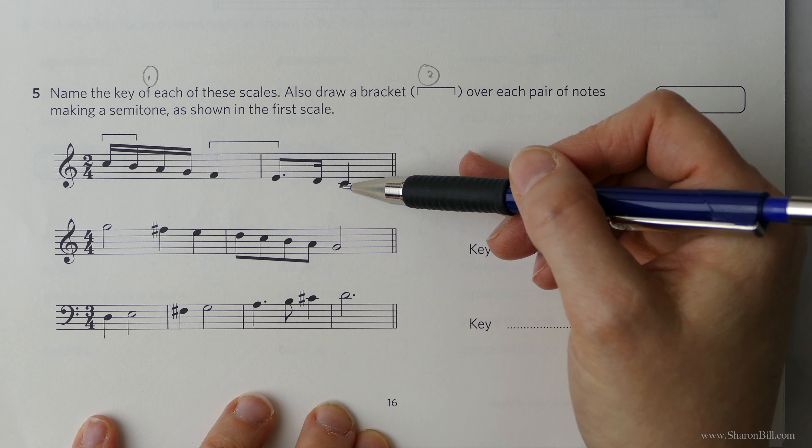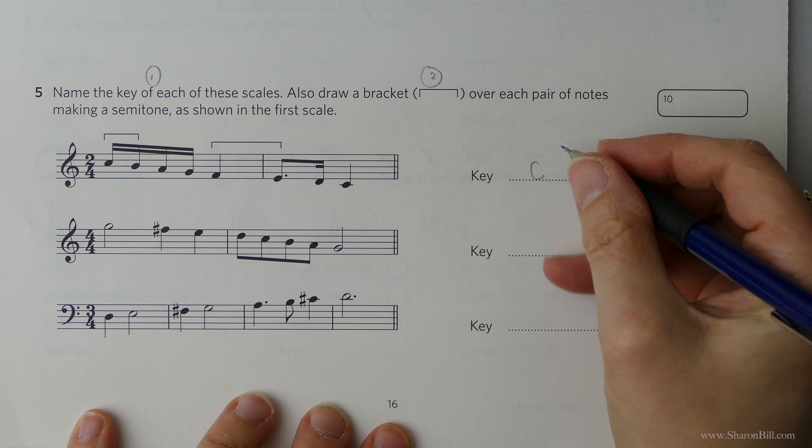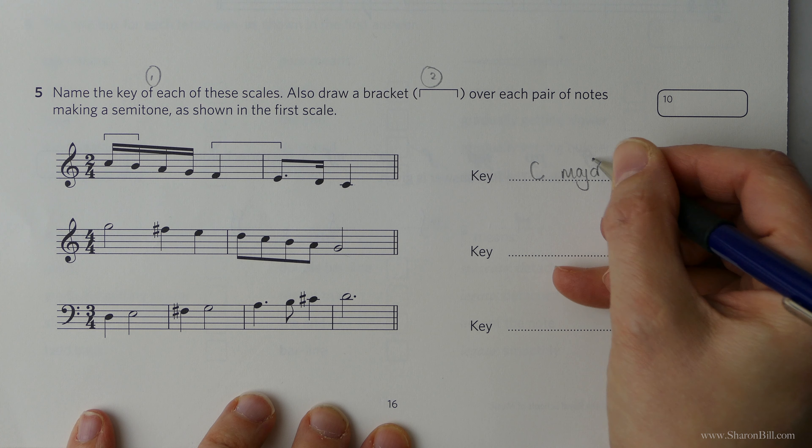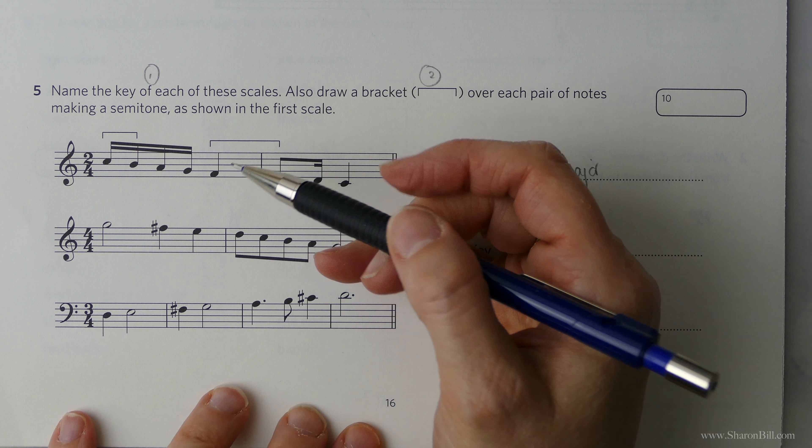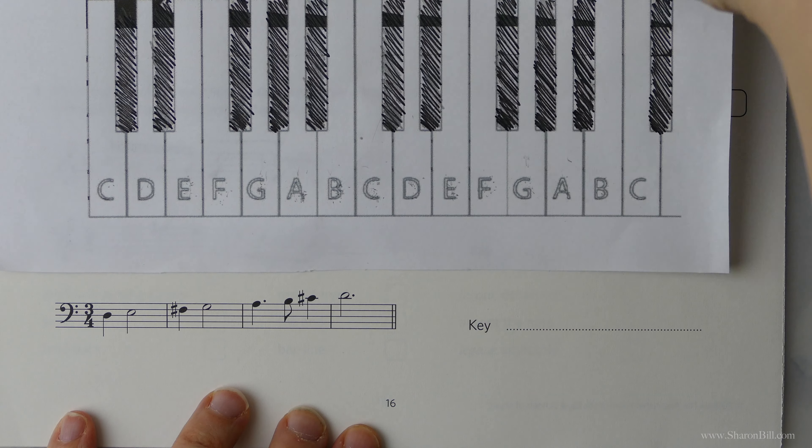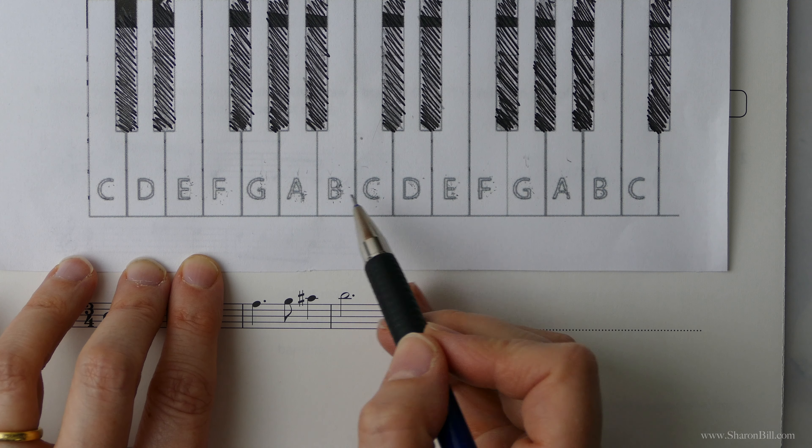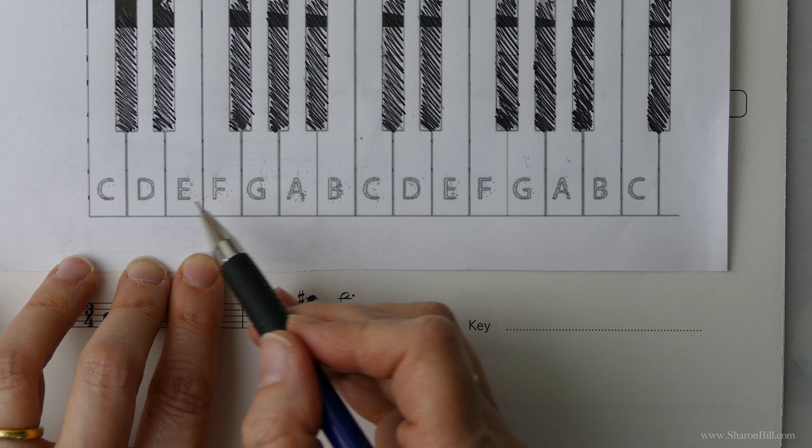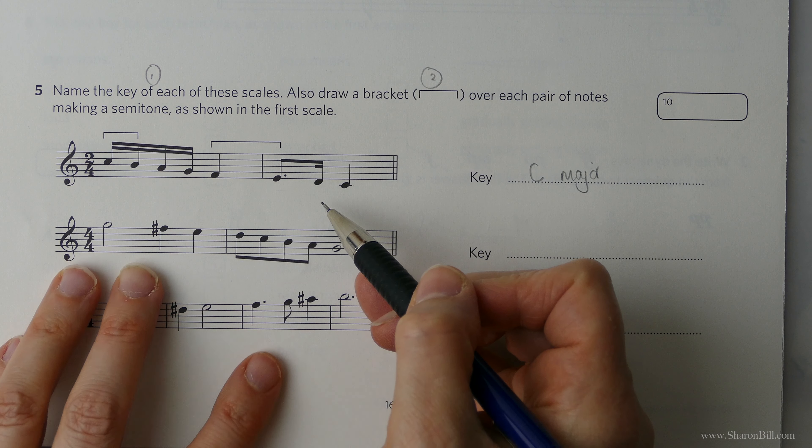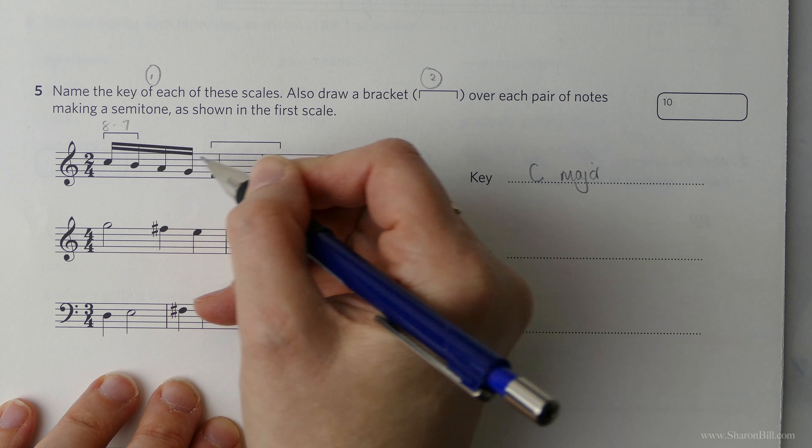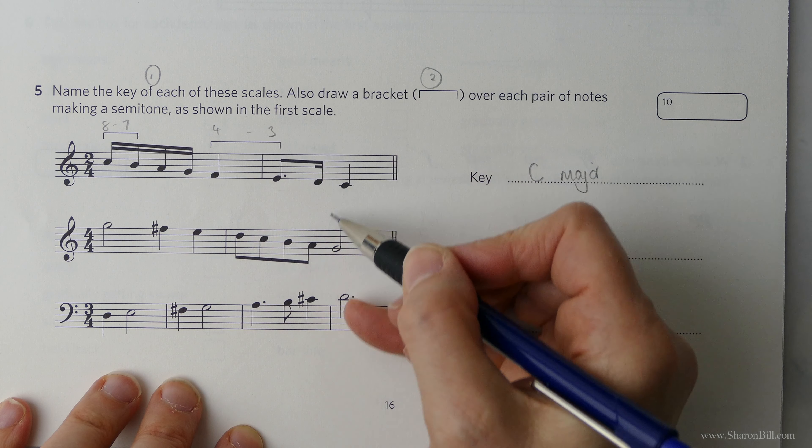So a scale must begin and end on its key note. And we're in the treble clef and we're beginning and ending on C. So we know that it must be C something. We know that it's C major because there are no sharps and flats. Now the semitones here are written in for us. And if we just look at the piano keyboard, we know that notes three to four, one, two, three to four, five, six, seven to eight are the semitones in the scale pattern for the major scale. That is always the case, otherwise it wouldn't be the major scale. And so here, because the scale is descending, we are going backwards. And we have here eight to seven, six, five, four to three. And so we can always just extrapolate that thinking to help us in the next one.